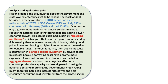One reason why a government might target a fiscal surplus to cut the national debt is that rising debt can lead to slower economic growth. This can be explained in part by crowding out theory, which argues that increased government spending and borrowing increases the supply of bonds, drives bond prices lower, and leads to higher interest rates in the market for loanable funds. Interest rates rising might then cause a contraction in planned investment by the private sector, because borrowing costs have become more expensive.